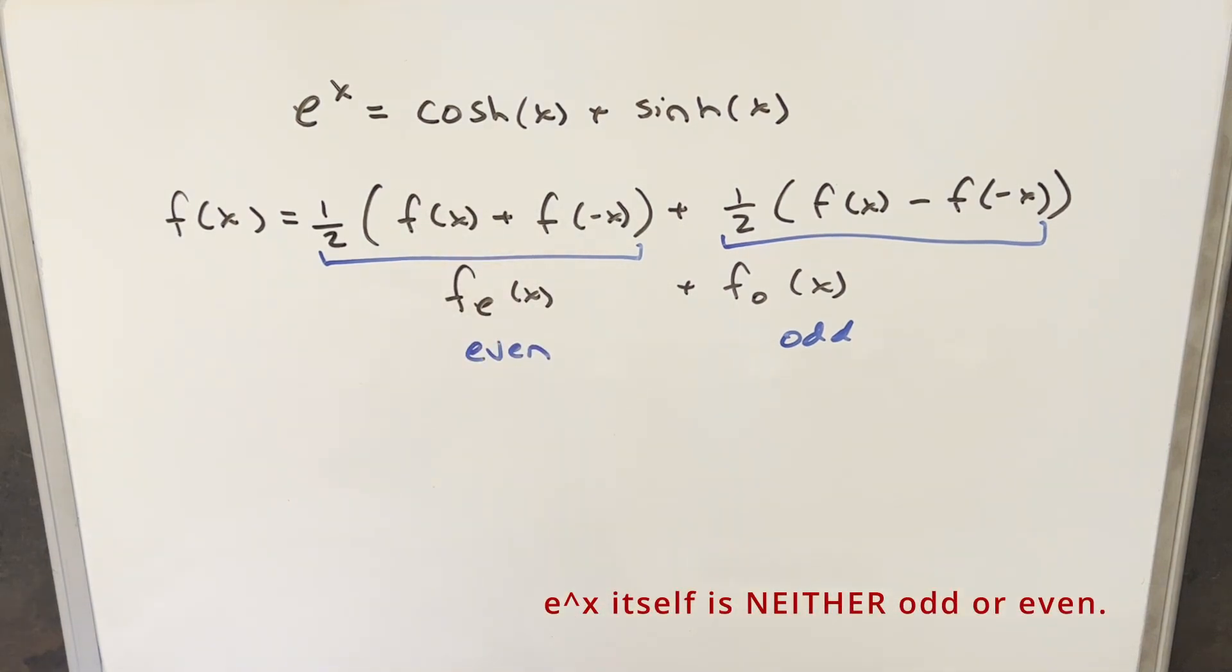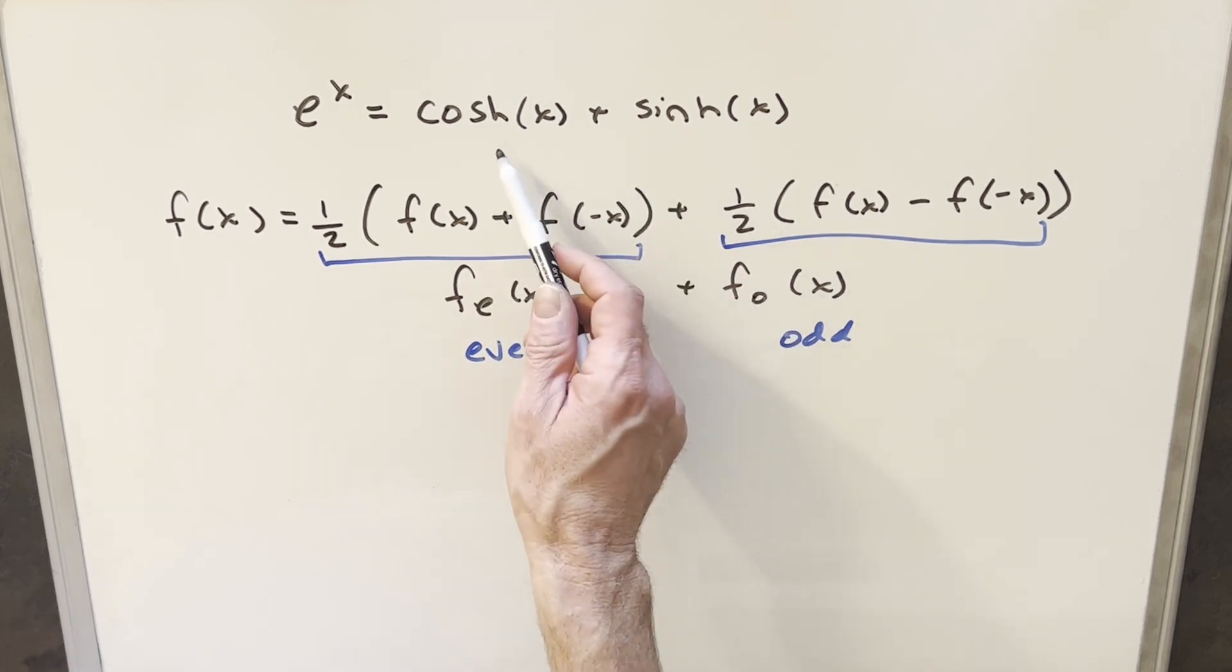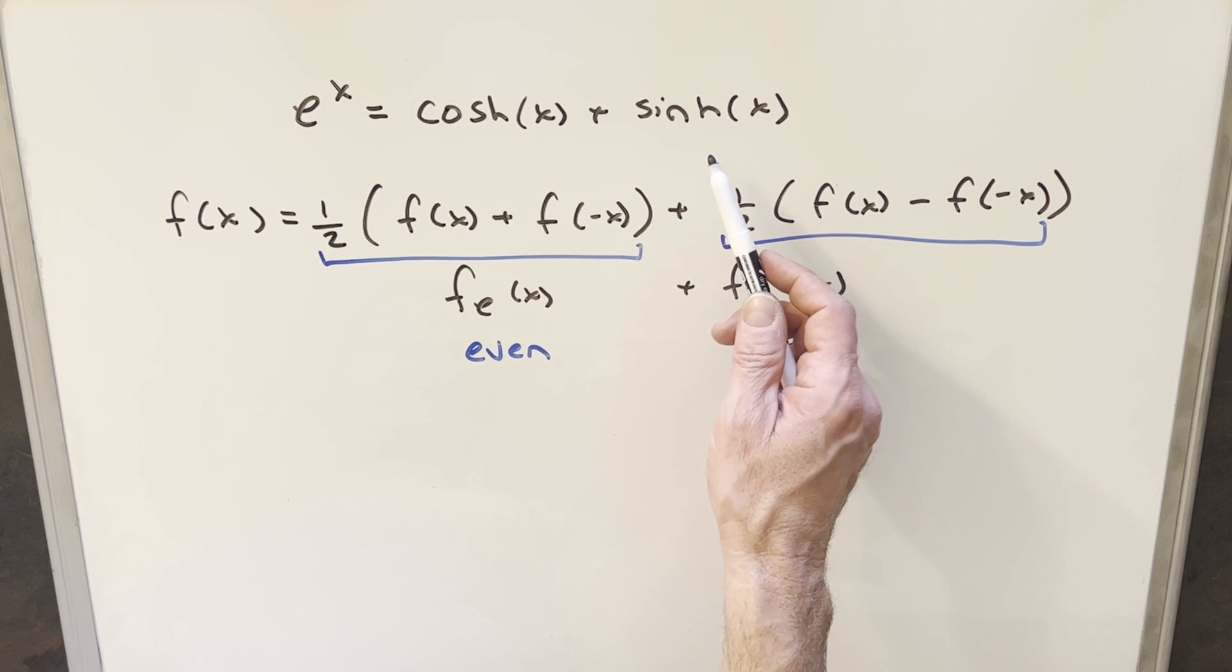So what we're going to do is we want to break up e to the x and we're going to see that it turns into cosh x plus sinh x, where cosh is going to be our even function and sinh is going to be our odd function.